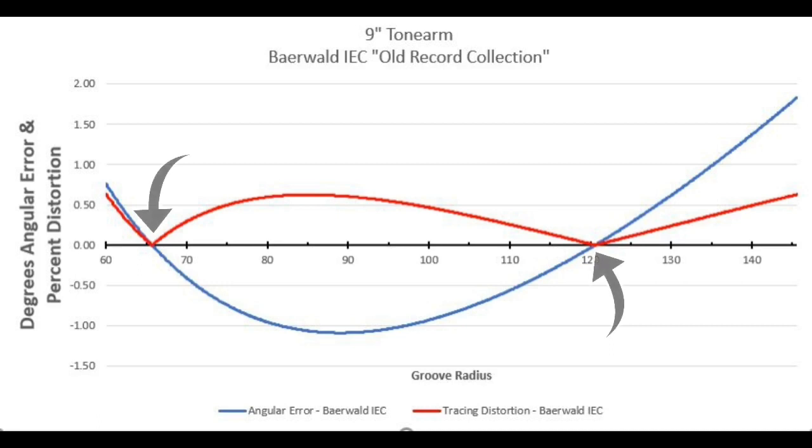Notice that the null points are skewed towards the inner portion of the record's playing surface. Why the skewed null points instead of a nice even distribution across the record? This is because the distortion characteristics of the angular error depend upon what radius you are playing at, with more distortion sensitivity towards the inner grooves — and this all has to do with the groove velocity at varying radii.